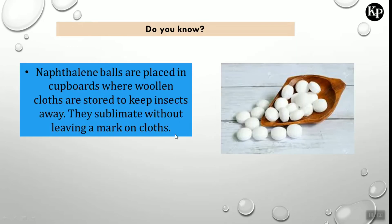Do you know that naphthalene balls are placed in cupboards where woolen clothes are stored to keep insects away? They sublimate without leaving any marks on the cloth.